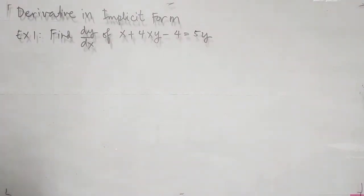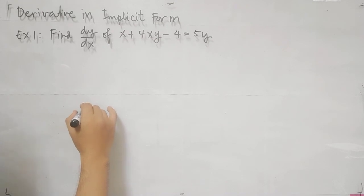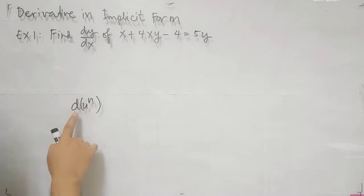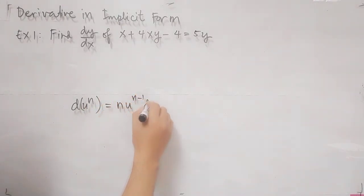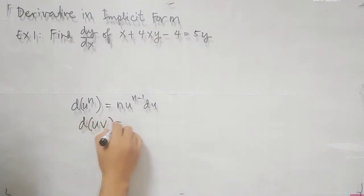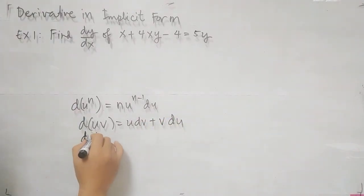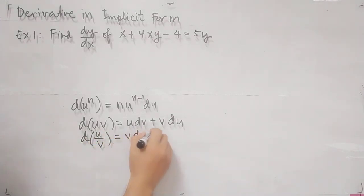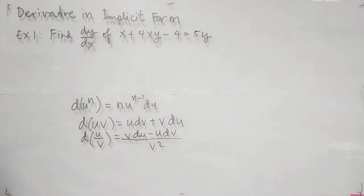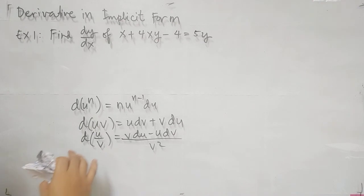Find dy over dx of this equation: x plus 4xy minus 4 equals 5y. The basic process in solving in implicit form is to follow the different rules of differentiation. Take note: the derivative of u to the n is n times u to the n minus 1 du. Also, the derivative of uv equals u dv plus v du, and the derivative of u over v equals v du minus u dv, all over v squared.